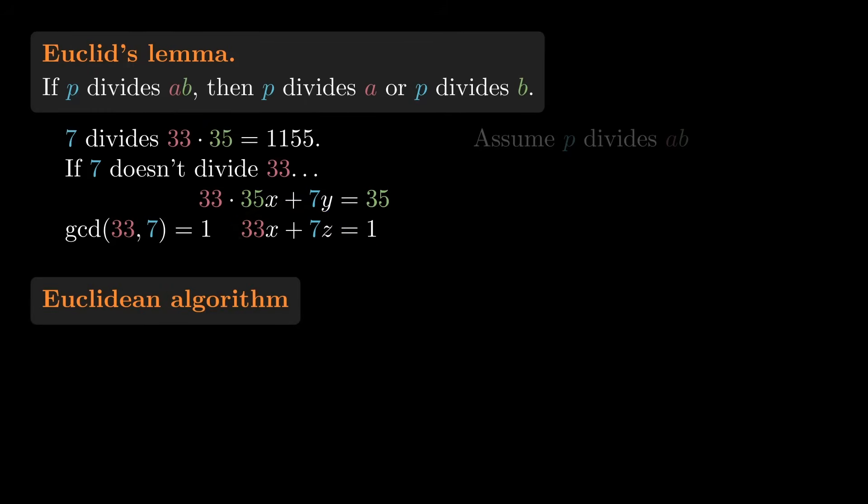But that's what the Euclidean algorithm does. It computes the GCD, so it'll give us a direct line from 33 and 7 to 1. All we have to do is unravel it.